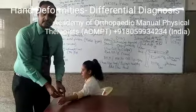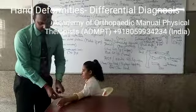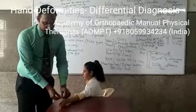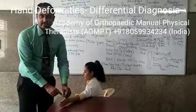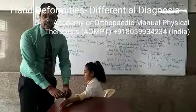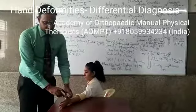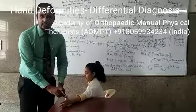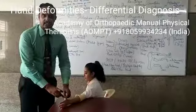Next, extensor pollicis longus — the long muscle inserted into the distal phalanx of the thumb — if that gets ruptured due to an avulsion fracture or tendon rupture, the interphalangeal joint of the thumb will be flexed because of unopposed action. Over a period of time, the metacarpophalangeal joint goes into extension, while the interphalangeal joint goes into flexion. This is the mallet thumb.